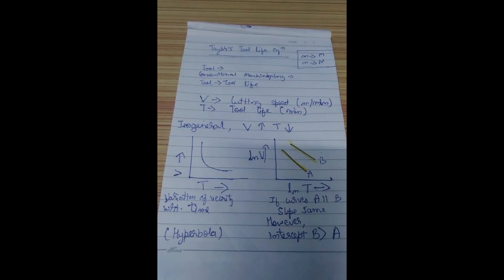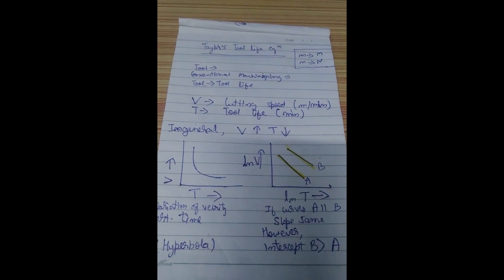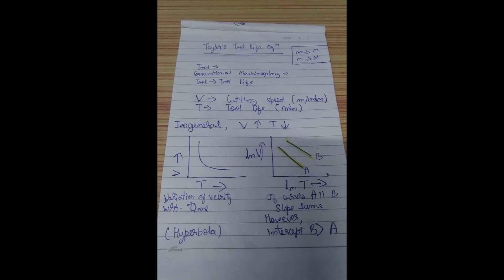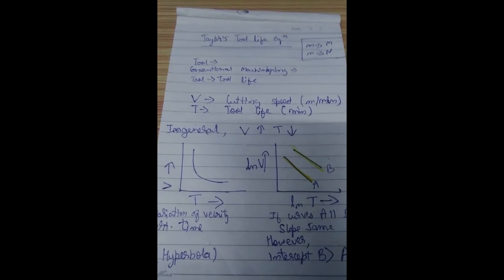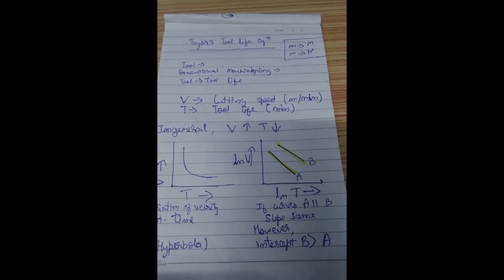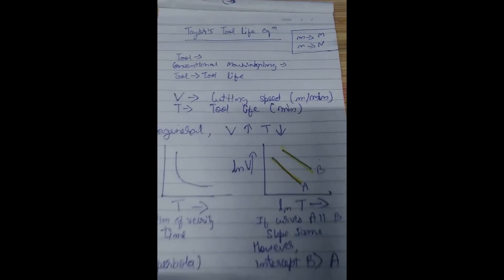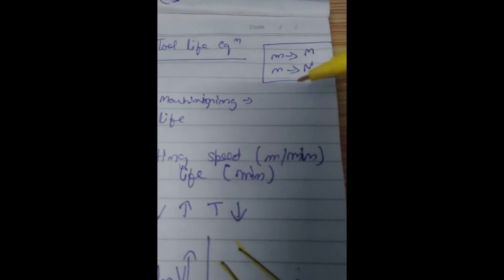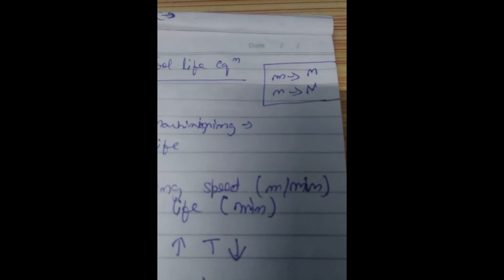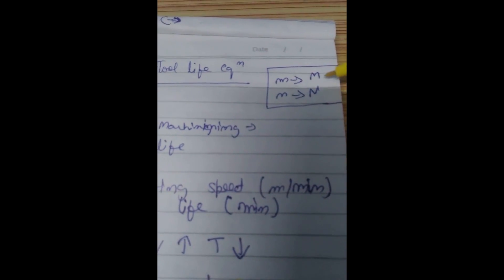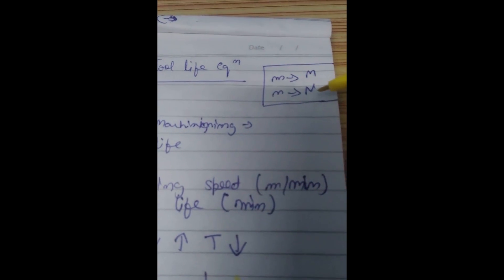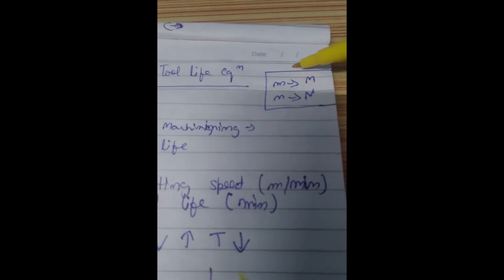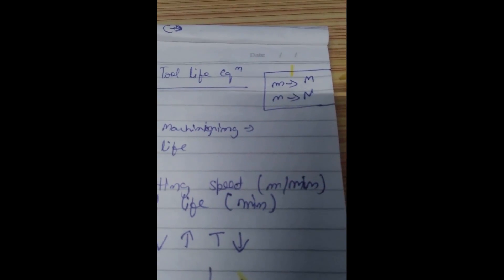So basically Taylor's tool life equation is an equation relating two parameters. Let us see what are these two parameters. First of all let me clear that in this derivation it's my habit since the beginning, I write m like this and n like this. So I have previously mentioned this separately so that anyone doesn't get confused.